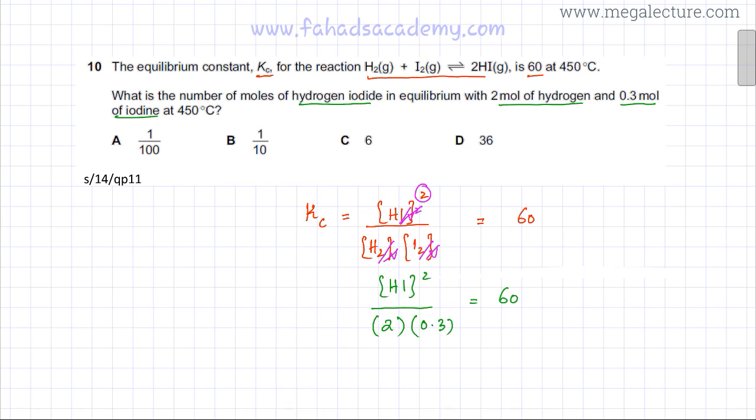So we just need to solve this now and find the moles of HI. The moles of HI on my calculator comes out to be equal to 6. So option C is going to be the correct option for this question.